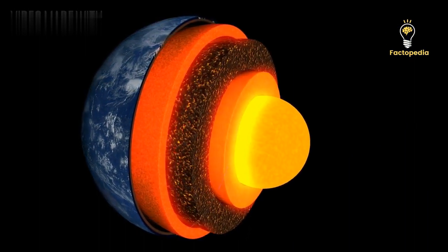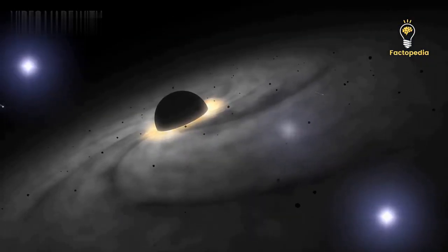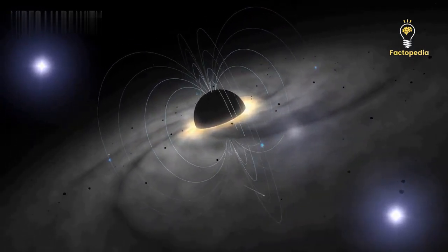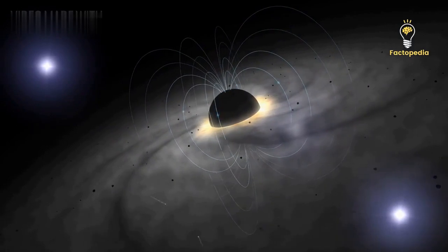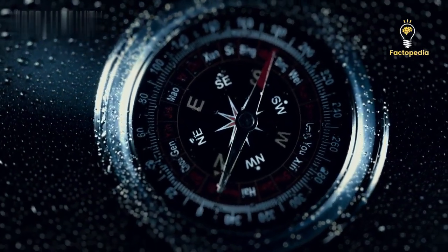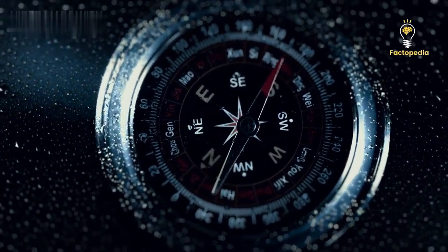The outer core and the inner core. The outer core, about 2,200 kilometers thick, is a molten metallic treasure trove, acting as a magnet that generates our planet's protective magnetic field. Without it, our compasses would be lost, and we'd be at the mercy of harmful solar radiation.